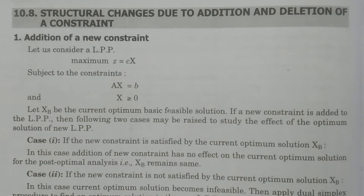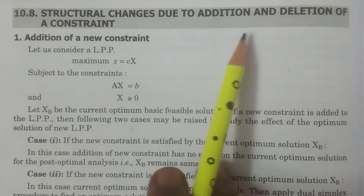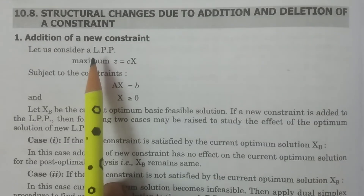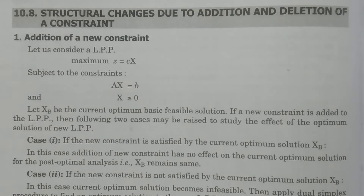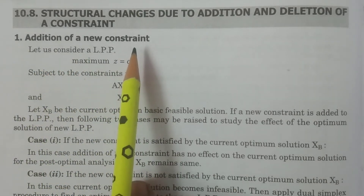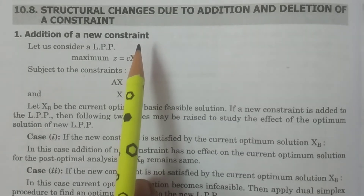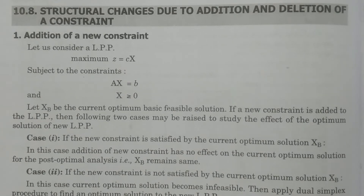BSc Statistics: structural changes due to addition and deletion of a constraint. In post-optimal analysis, we will explain two cases. First, addition of a new constraint. The structural changes in post-optimal analysis — the optimality conditions must be satisfied.